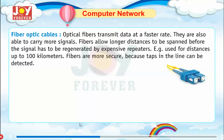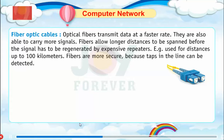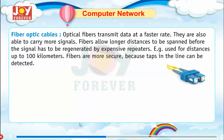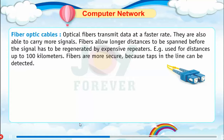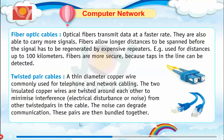Cabling used in wired connections — Fiber optic cables: optical cables transmit data at a faster rate and are able to carry more signals. Fiber allows longer distances to be spanned before the signal has to be regenerated by expensive repeaters. For example, they are used for distances up to 100 km. Fibers are more secure because taps in the lines can be detected.